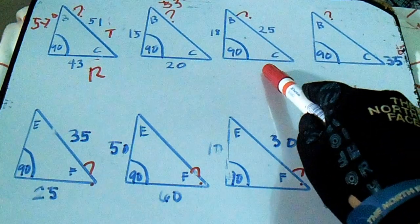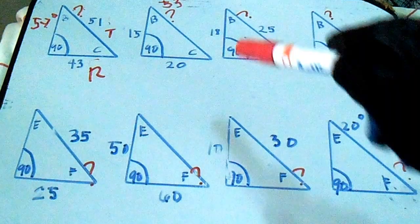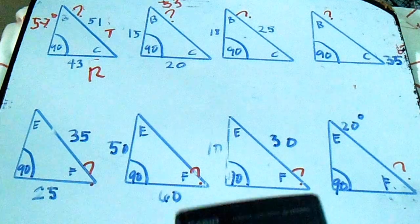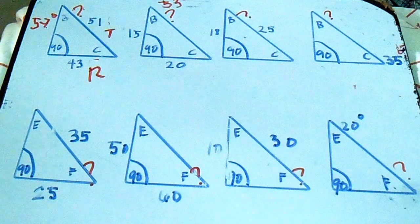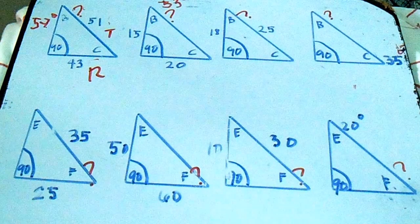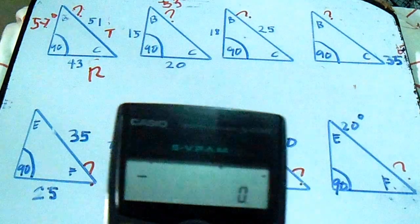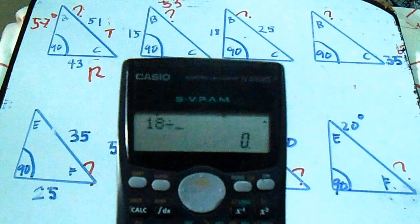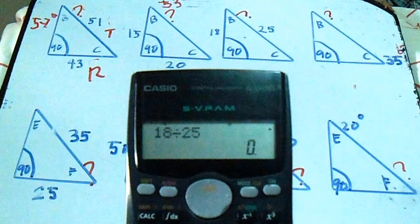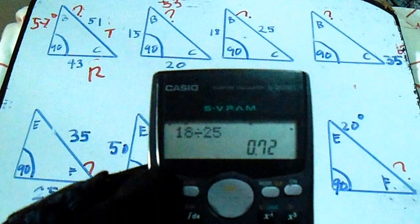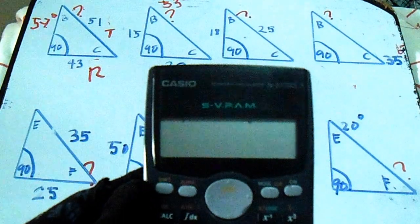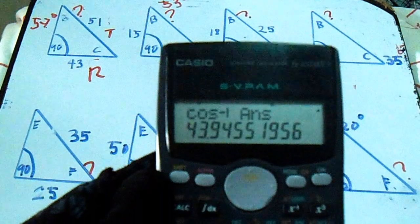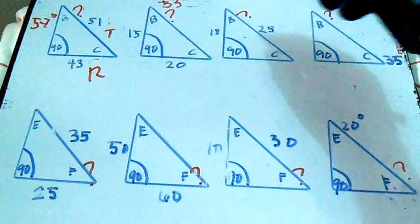Next, our given is set and travel — we will compute letter B again. Divide set 18 by travel, then press shift and use inverse cosine. Our answer is approximately 43 to 44 degrees.